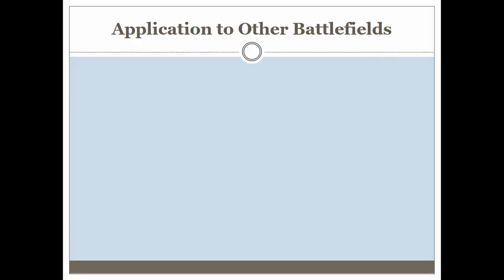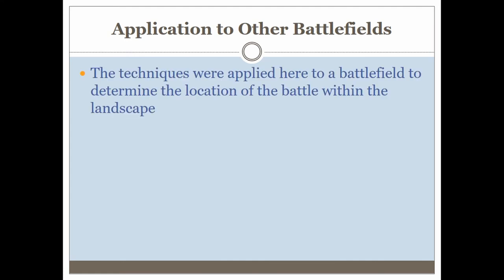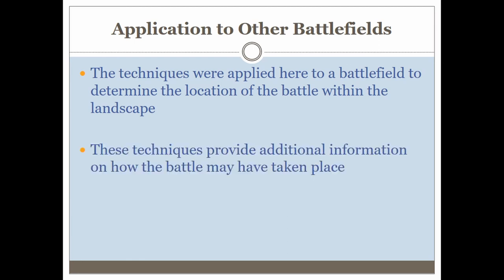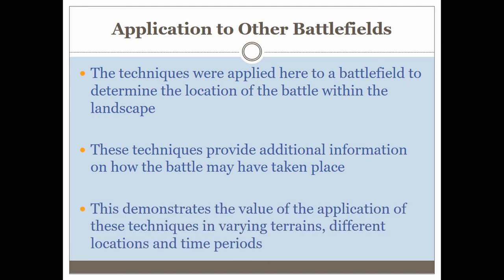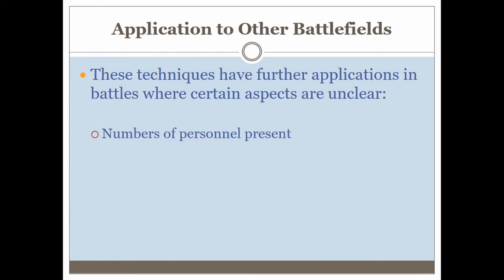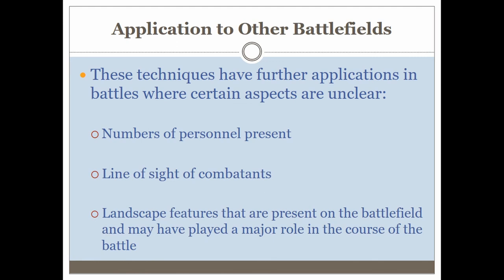What does this tell us about the battlefield that we didn't know before? Applying these techniques helps determine whether the battle could have taken place in this area — and yes, it could, as far as my colleague's knowledge of the secondary source material is concerned. These techniques provide additional information on how the battle may have taken place and demonstrate they can be applied to battlefields where very little is known, answering questions like: how much room does an army take up, could parts of the battlefield be separated by visibility, and what landscape features — like the river, hill, or plateau — proved important?